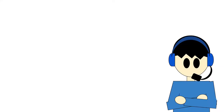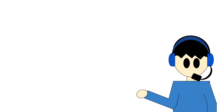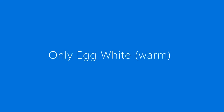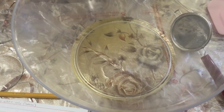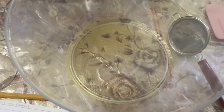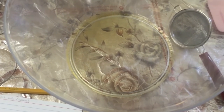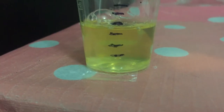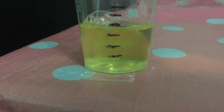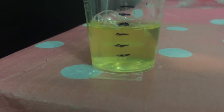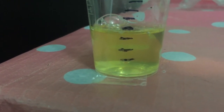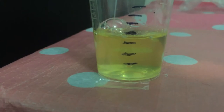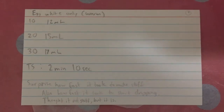I pretty much repeat this process over and over. To minimize time, I decided to only record the start of the lab, the result after 30 minutes, and the recorded result. Here is the egg white only, but this time it's warm instead of cold. I blended it and the warm egg white result after 30 minutes seemed to be around 17 milliliters.